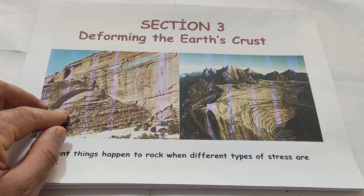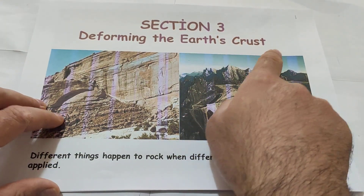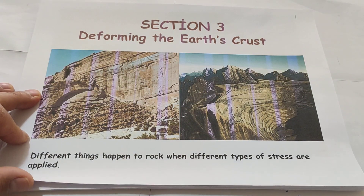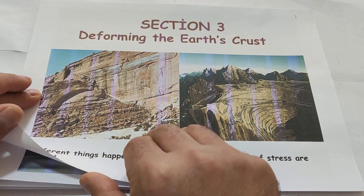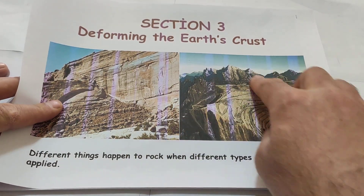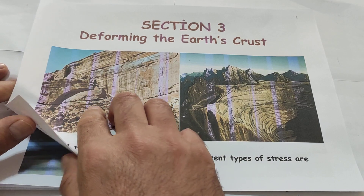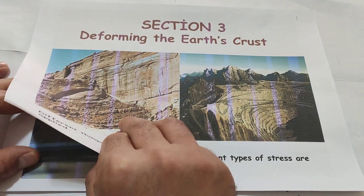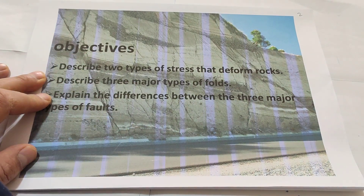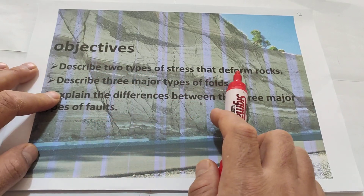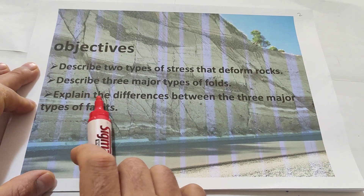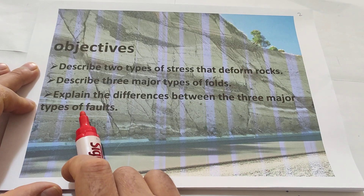Section 3, students: deforming the earth's crust. Different things happen to rock when different types of stress are applied. This is similar to tectonic plates — the crust layer moves, but it is going to deform the layer of earth. That is called deforming the earth's crust. In this section, we are going to learn these objectives: describe two types of stress that deform rocks, describe three major types of folds, and explain the differences between the three types of faults.